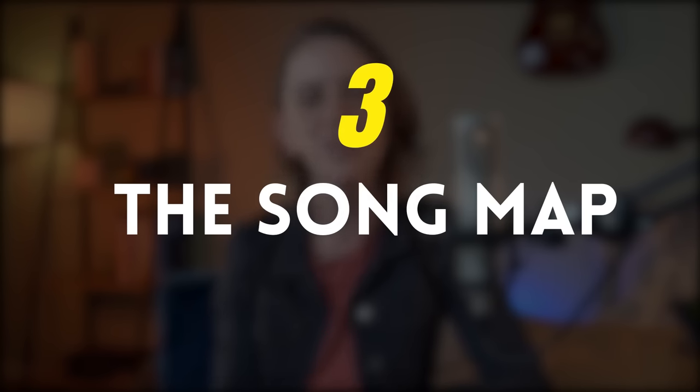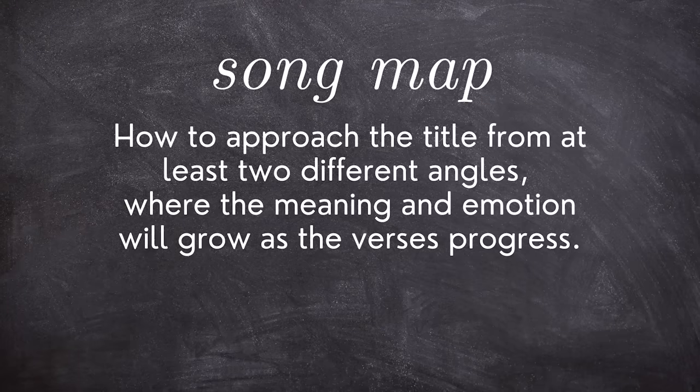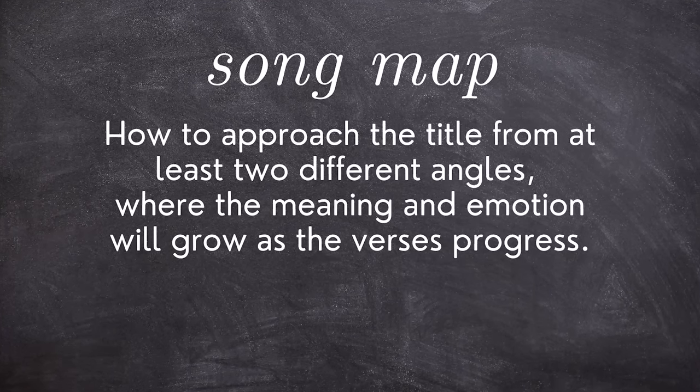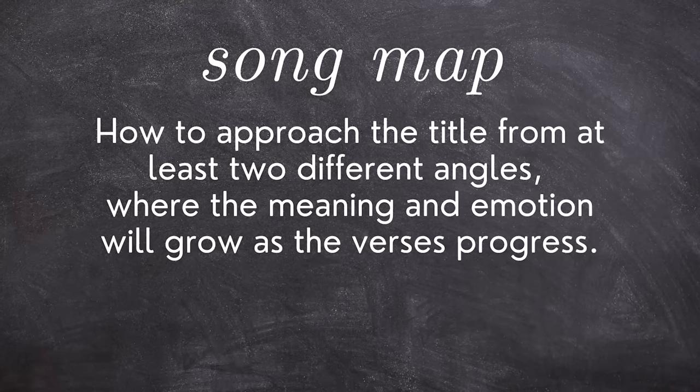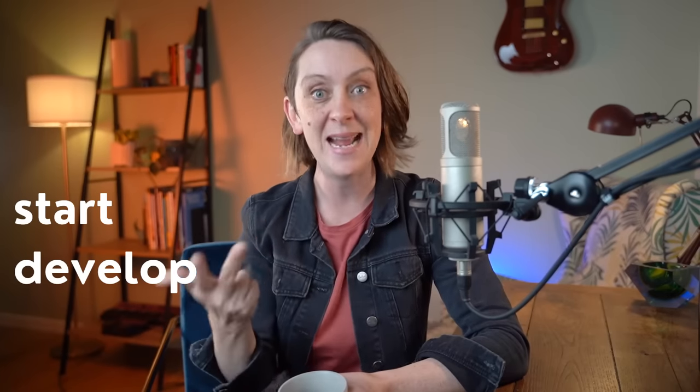Let's remember an important thing: you can change the title as you go. You're not contractually obliged to stick with the first title you pick. But the key is that giving your concept direction through choosing a title puts you in motion, and it's that momentum that will often set you on the path to discovering new and better ideas. Let's talk about our final component of this formula: the song map. In essence, a song map is nothing more complicated than having an idea about how you could approach this title from at least two different angles where the meaning and emotion will grow as the verses progress. The concept plus the title needs to contain a clear way that your song idea could start, develop, and then escalate.